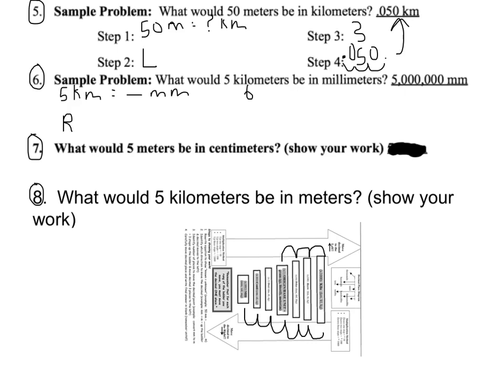So then we have to move our decimal those six spots. There's where it starts. One, two, three, four, five, six. Fill in those zeros. We would end up with five million millimeters, which is the correct answer.